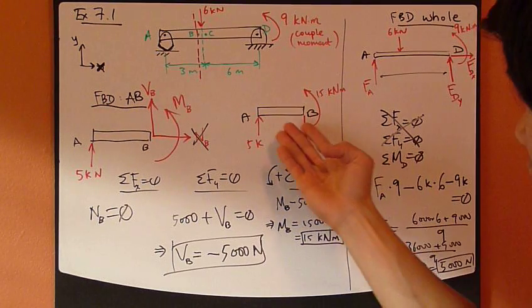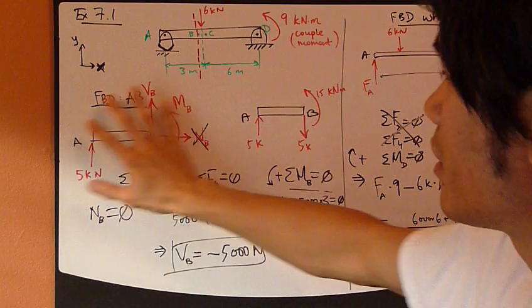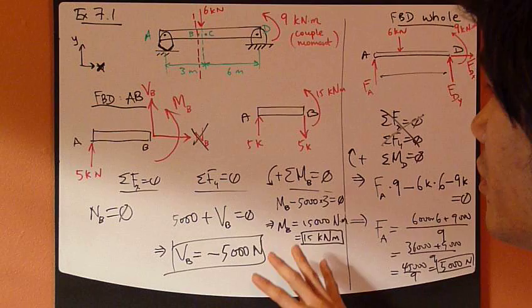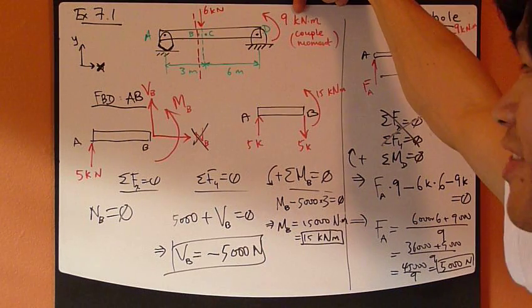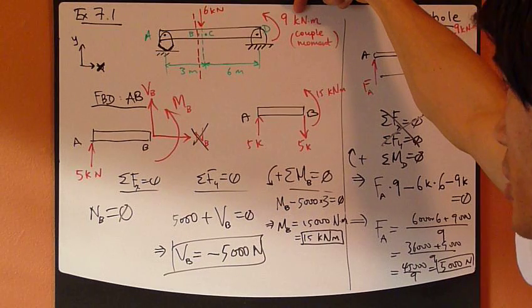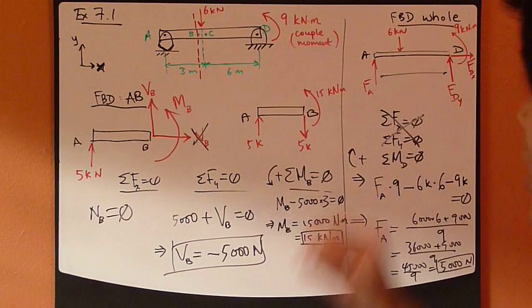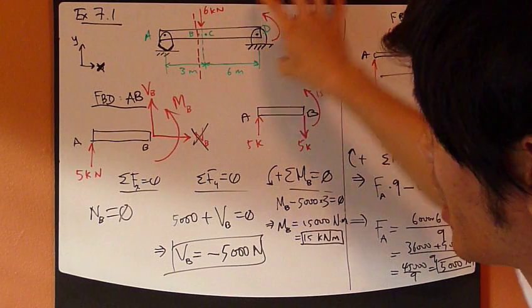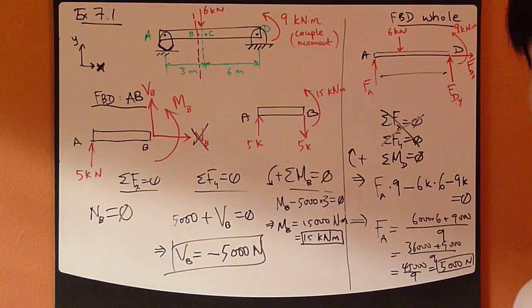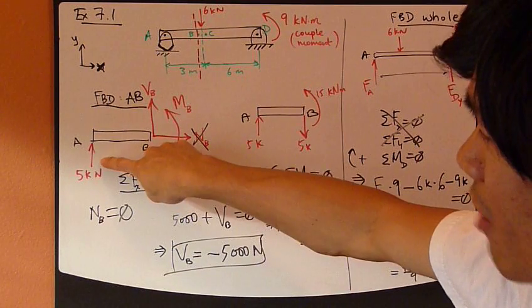This is an equilibrium. Now, notice that in this analysis, this applied couple moment of 9,000 newton meters does not appear here at all. We don't take into consideration of this for this calculation.